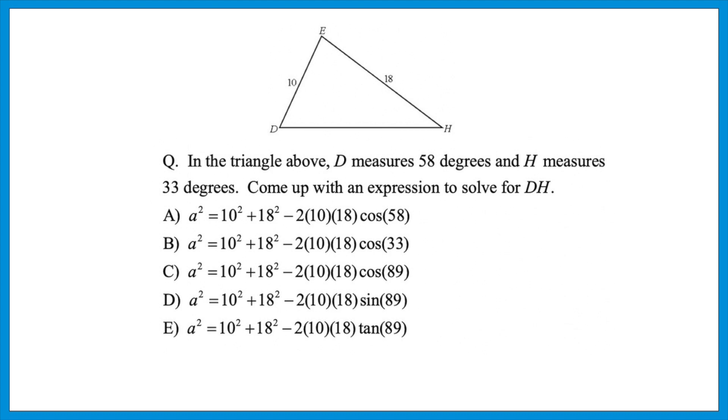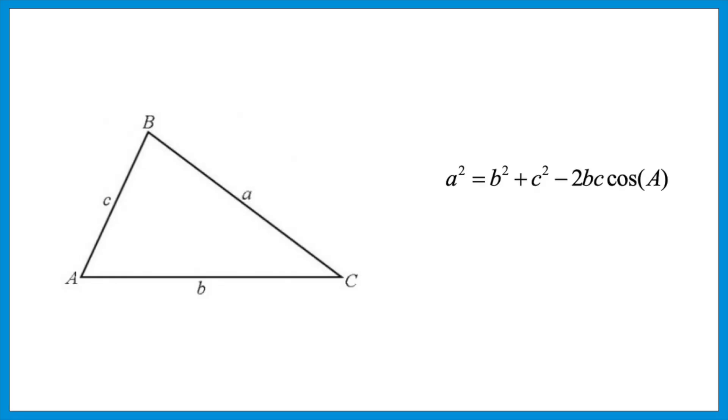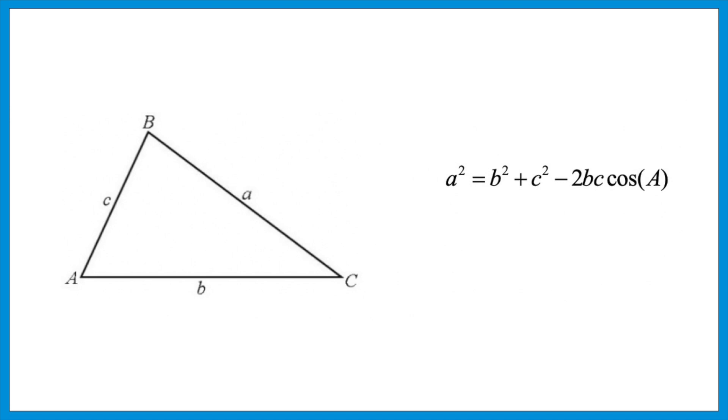Let's look at another question where you can use the answers to avoid complicated math. In the triangle above, angle D measures 58 degrees and angle H measures 33 degrees. Come up with an expression to solve for side DH. First, let's talk about the law of cosines — the test will give you that formula. The law of cosines says: a² = b² + c² − 2bc·cos(A). A little letter means a side, and the big letter means the angle that corresponds to it. So when they say little a², it means the side, and cos(big A) means the corresponding angle.